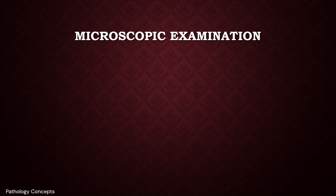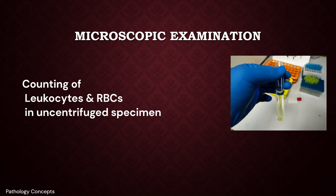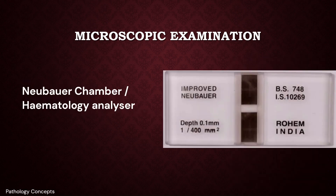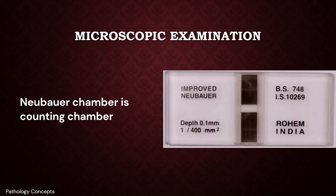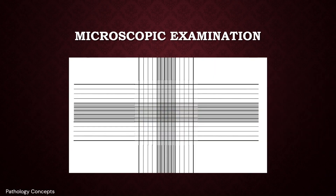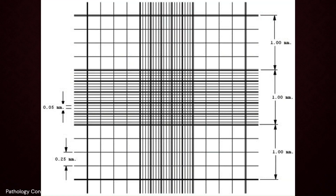Let's learn the microscopic examination of CSF. It is done by counting leukocytes and RBCs in an uncentrifuged specimen. It is performed with the help of a Neubauer chamber or automatically in a hematology analyzer. The Neubauer chamber is a counting chamber, and the central region of the counting grid is important for cell count.